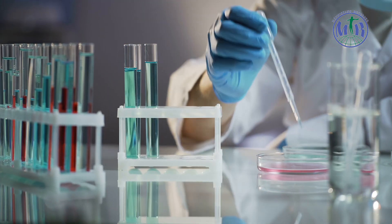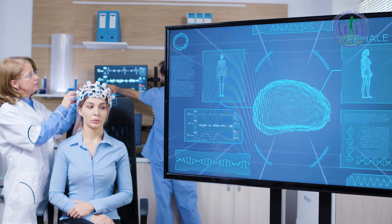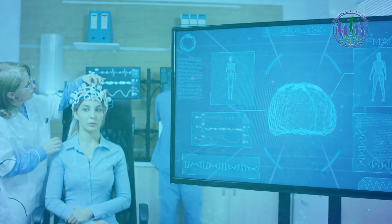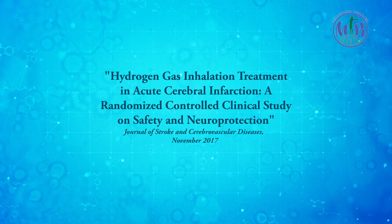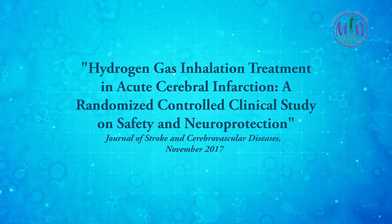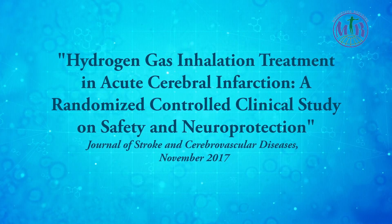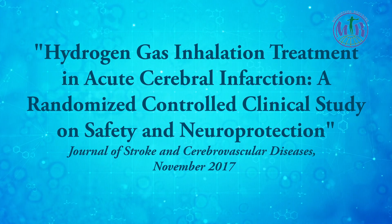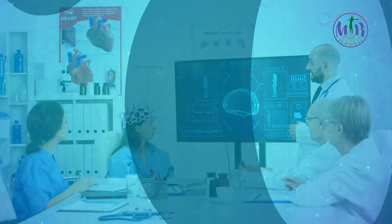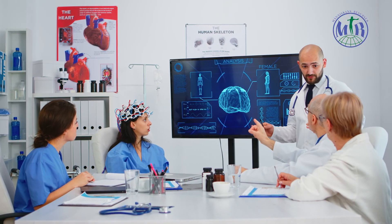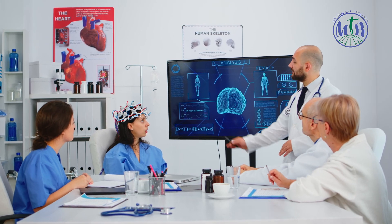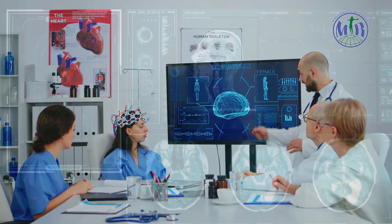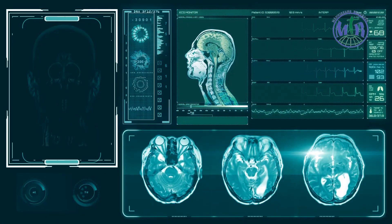There are also studies on the protective properties of hydrogen on human brain cells. A study on hydrogen inhalation treatment for acute brain infarct, a randomized controlled clinical study on safety and neuron protection. In addition to the preventive effect, the study found a therapeutic effect, which was confirmed by a large number of tests and the overall clinical state.